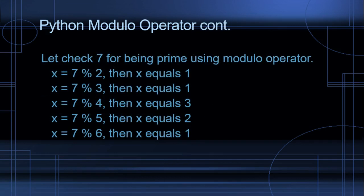Now, let's try it with 7. So, x equals 7 modulo 2, then x will be equal to 1. x equals 7 modulo 3, then x is also equal to 1. x equals 7 modulo 4, then x equals 3. x equals 7 modulo 5, then x is equal to 2. x equals 7 modulo 6, then x is equal to 1.